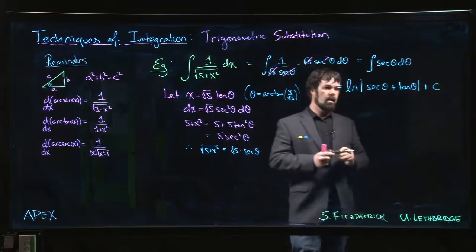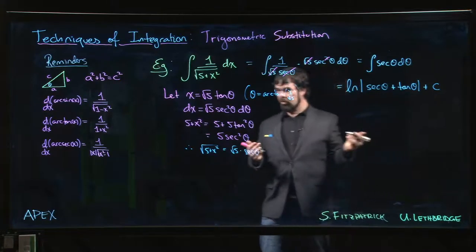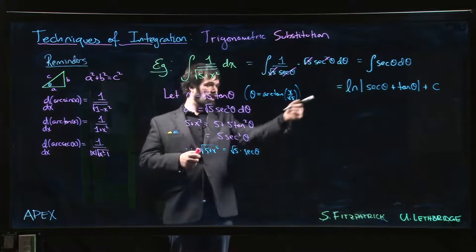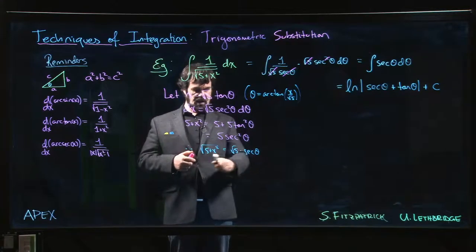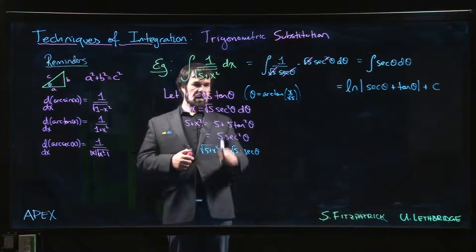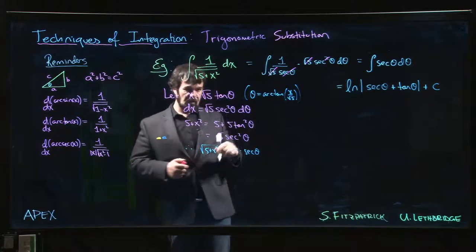Put our constant in there. But of course, we don't want to leave our answer in terms of theta, right? We want our answer in terms of x. So we have to come back to here and we say, okay, what's secant theta? Divide both sides by root 5, I've got that sitting there. Tan theta? Well, of course we know what tan theta is. It's x over root 5.